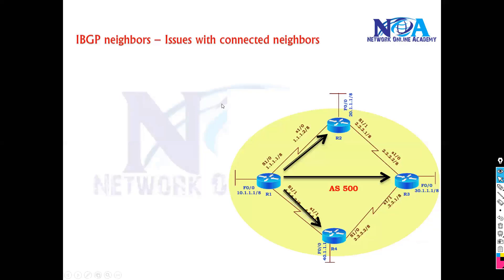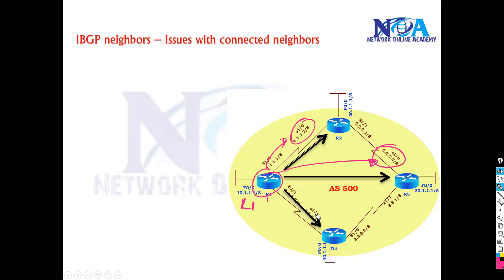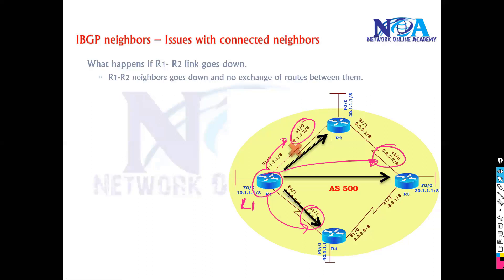In this scenario, router one is forming neighbors with 1.1.1.2 and 2.2.2.2 on router two, forming a full mesh. Router one is also forming neighbors with 4.4.4.1. Now, what happens if any of your physical interfaces goes down?